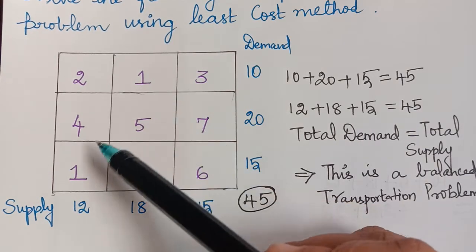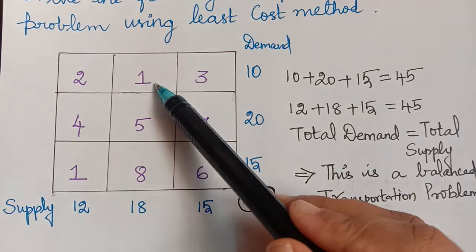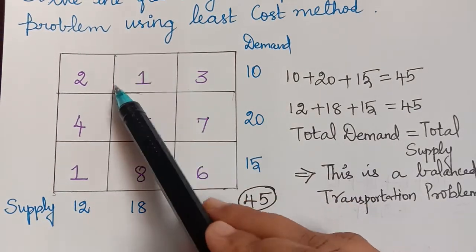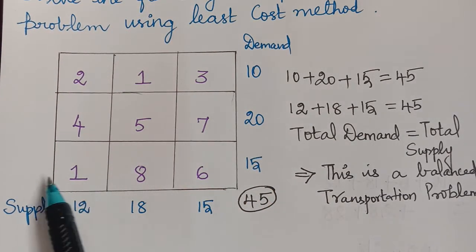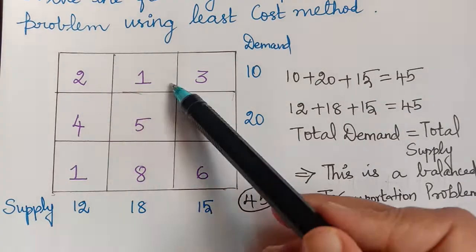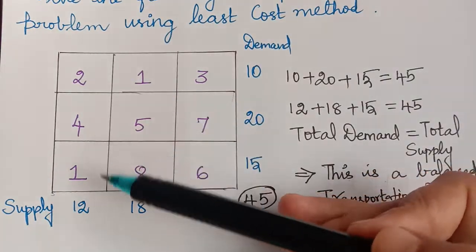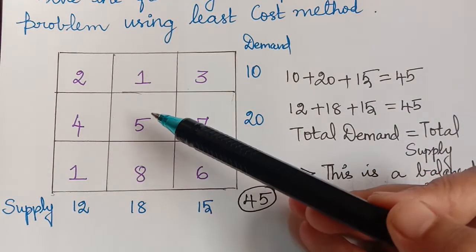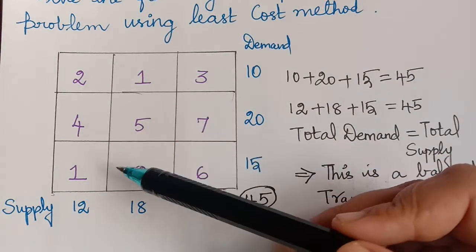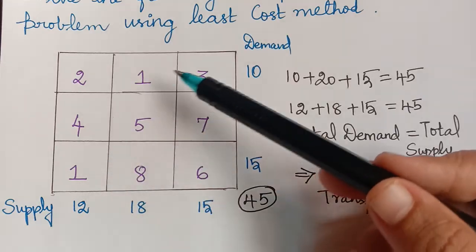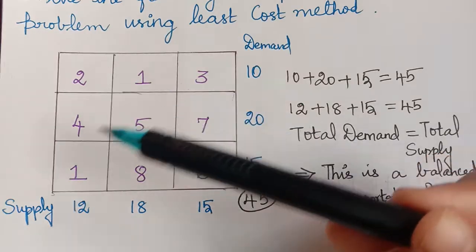We have to check whether the two 1s have appeared in the same row or same column. This one appeared in the first row and second column, and the other appeared in the third row and first column — two different rows and columns. In that case, we can give the allotment to any one of them arbitrarily.